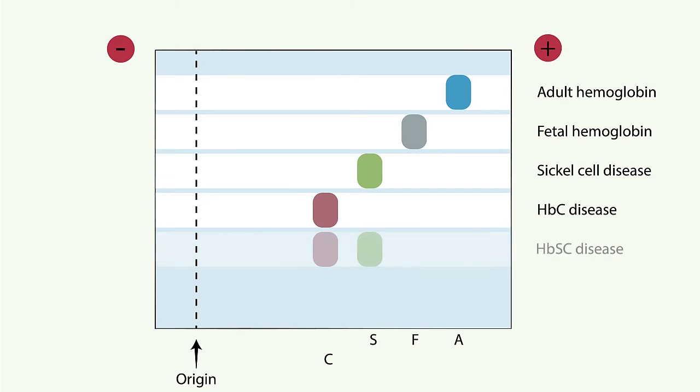Patients with hemoglobin SC, in which there are different mutations in the two beta-globin genes, one coding for valine instead of glutamic acid and one coding for lysine instead of glutamic acid, is milder than hemoglobin SS disease.